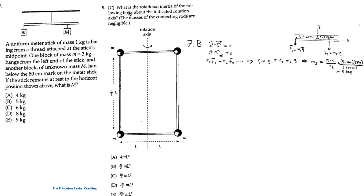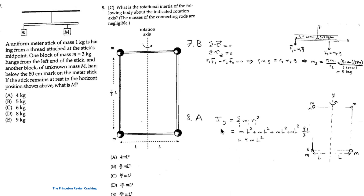For question 8, what is the rotational inertia of the given body about the indicated rotation axis, with negligible connecting rod masses? The moment of inertia about the y-axis is Σ mᵢrᵢ². The perpendicular distance from each mass to the axis of rotation equals L for all masses, so the moment of inertia is 4ML². The answer is A. Note that the other distance given is irrelevant.